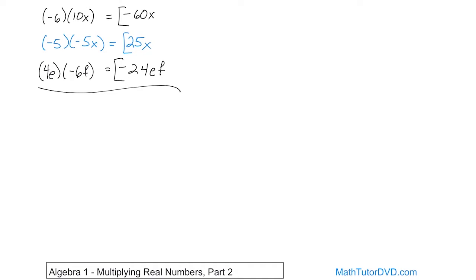What if you had negative 3p times negative 4q? You have two terms, both negative. Negative times negative — same signs — means you get a positive answer. 3 times 4 is 12, so you get positive 12 times p times q. That's the final answer.